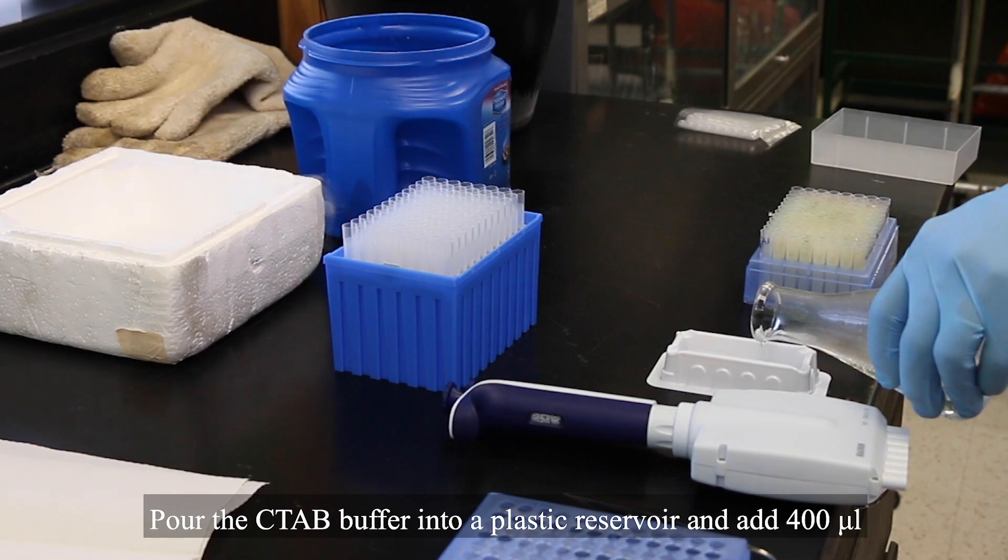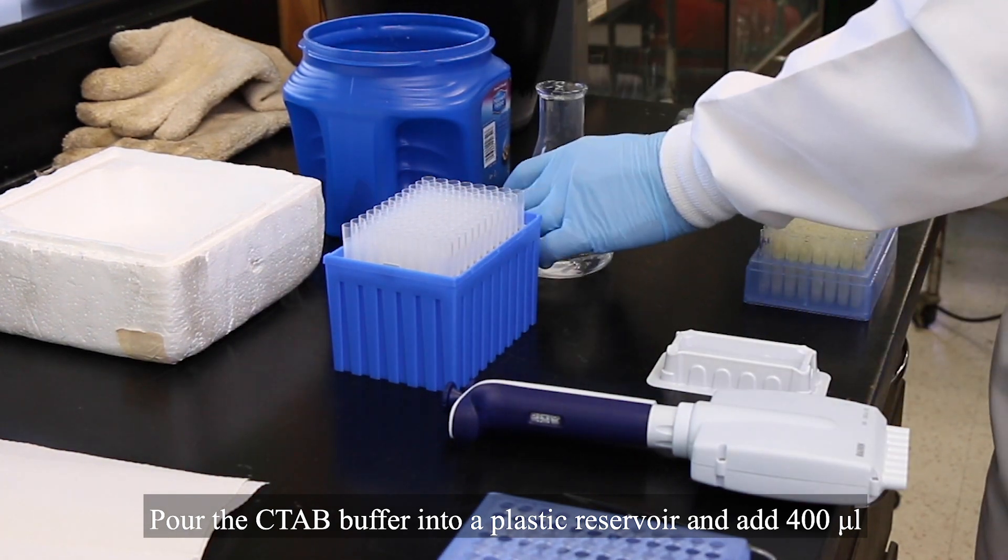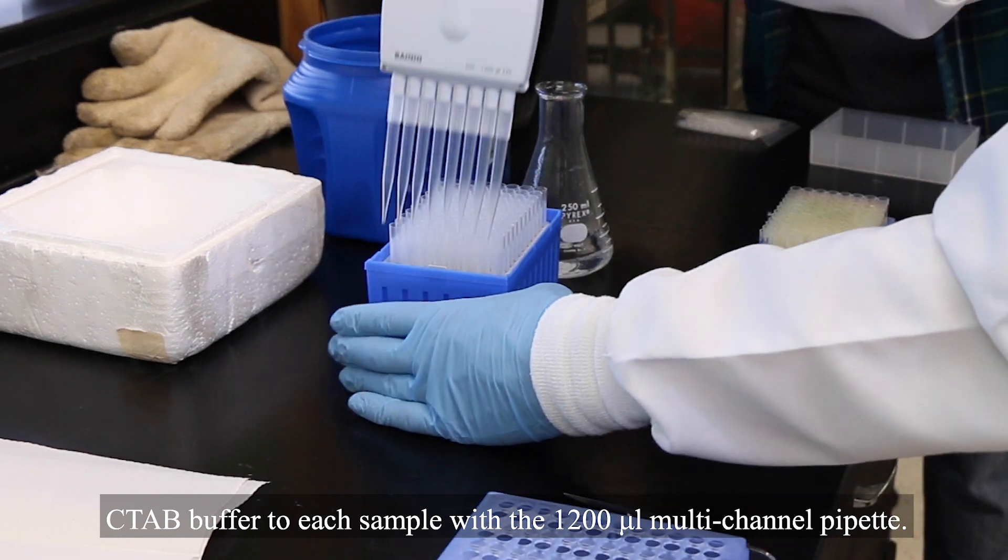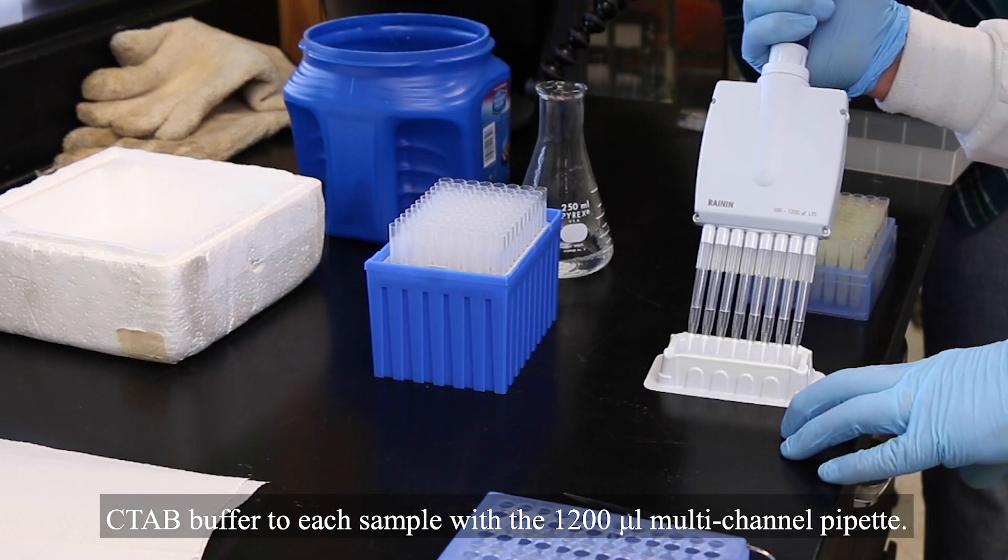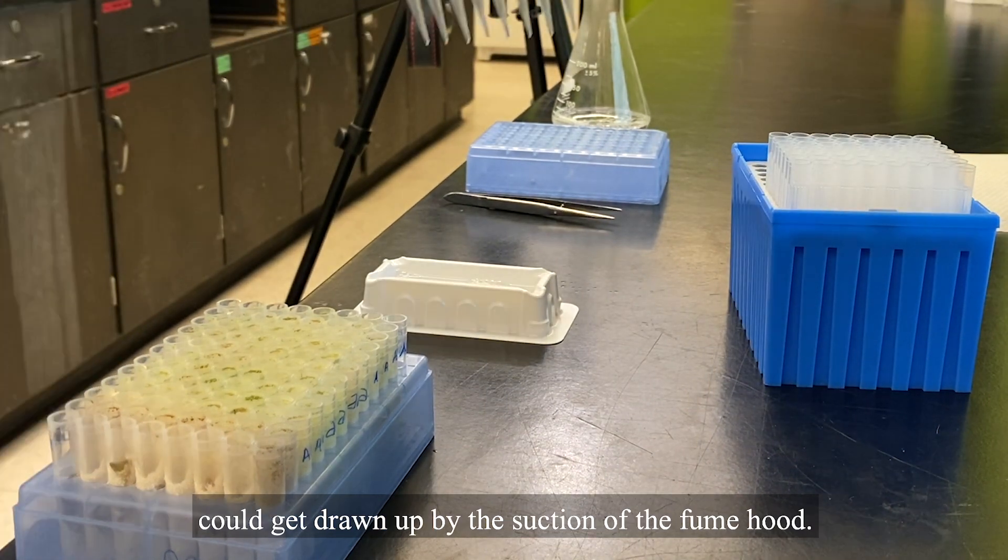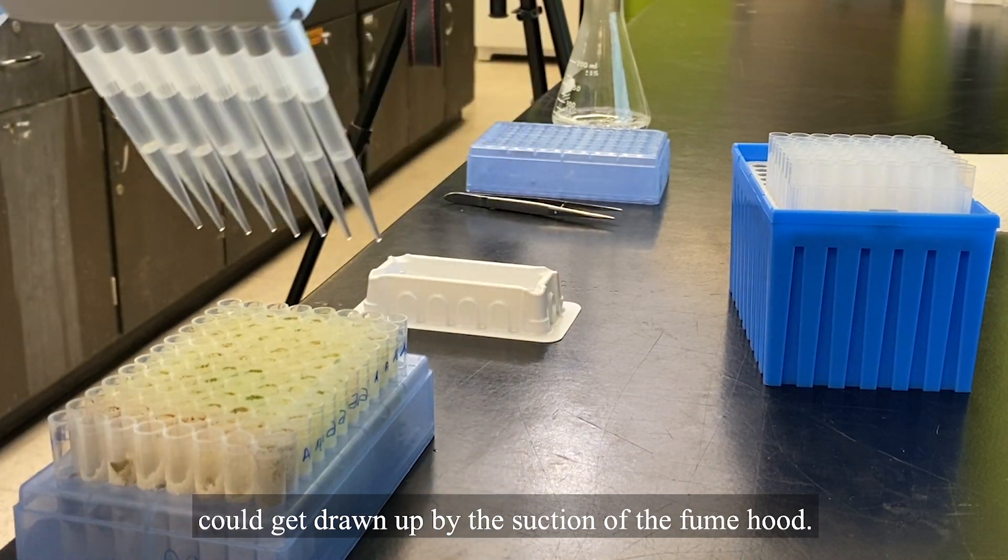Pour the CTAB buffer into a plastic reservoir and add 400 microliters CTAB buffer to each sample with a 1200 microliters multi-channel pipette. This should be done on the open lab bench as powdered tissue could get drawn up by the suction of the fume hood.